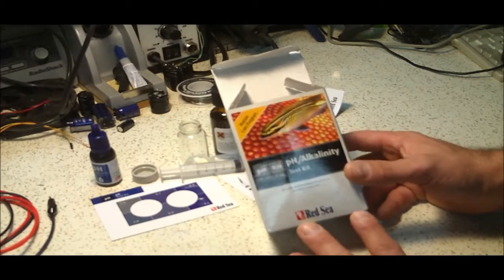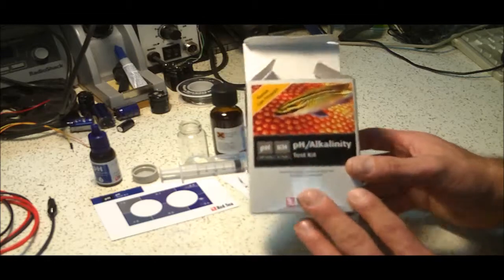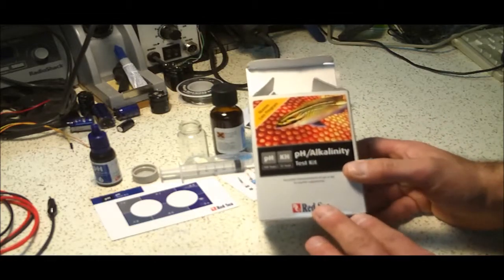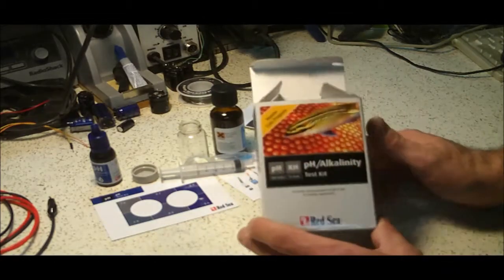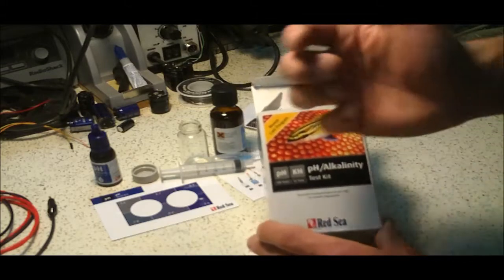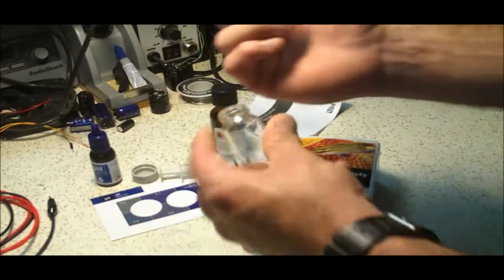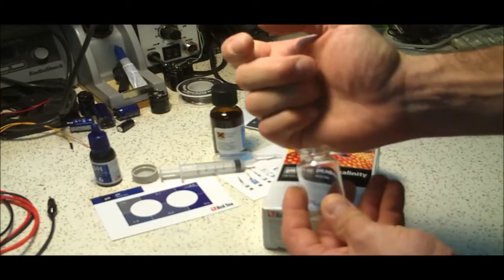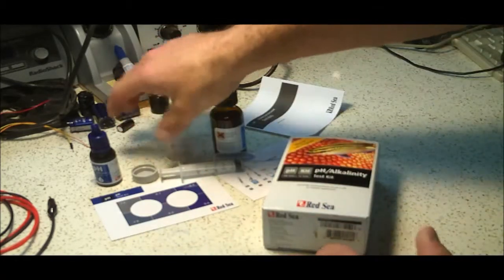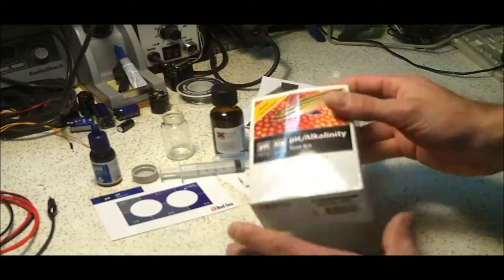I can't seem to find any pictures online of what you actually get in the box. They refer to the alkalinity test as a titration test and the only one I've seen is that little handheld unit where you screw the glass vial onto and you actually drip the titration solution in. Anyhow, that's not what you get in this box.